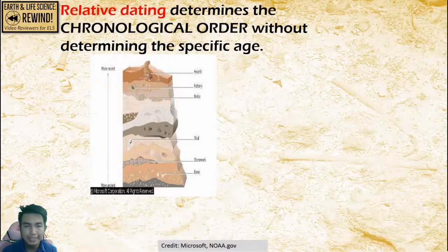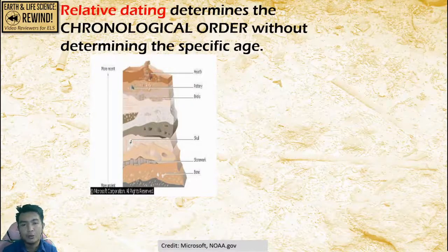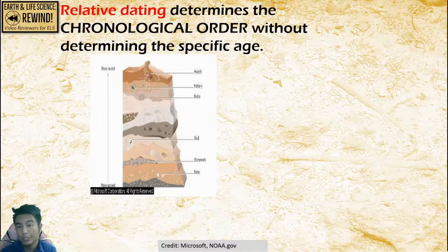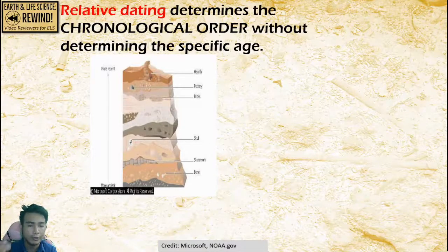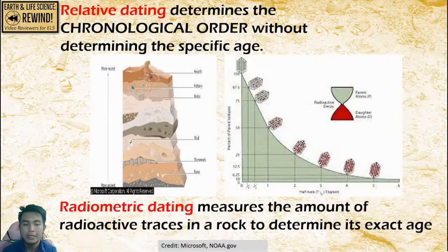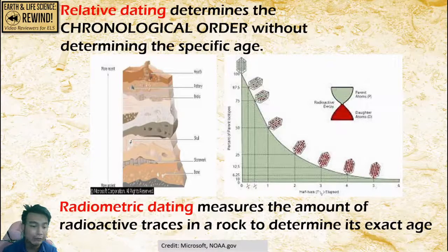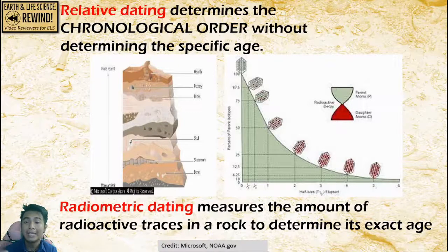Relative dating determines the chronological order of events without determining how really old they are — just who's in order, who's first, second, third, and the last one. Radiometric or absolute dating measures the amount of radioactive traces and determines its exact age using technology.